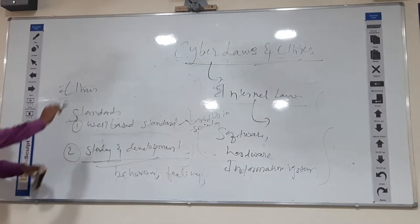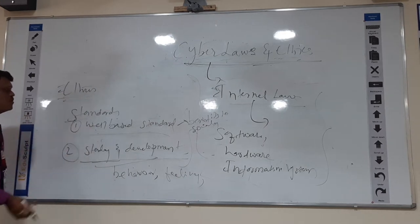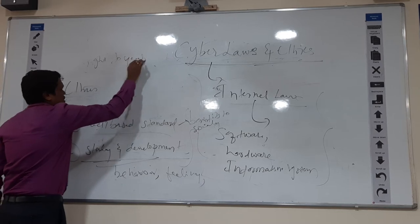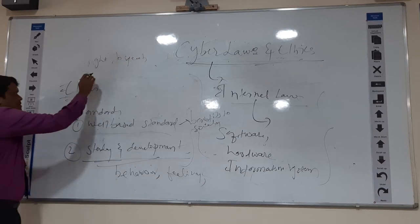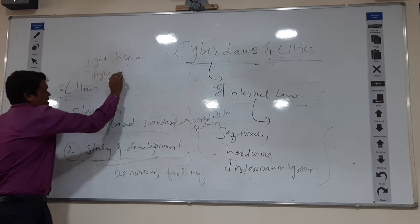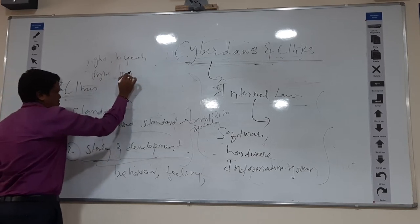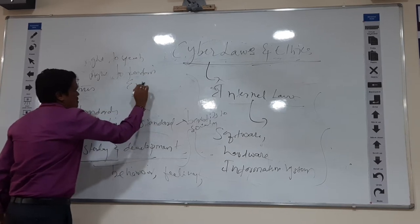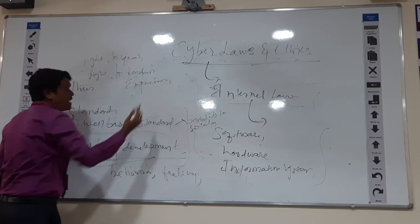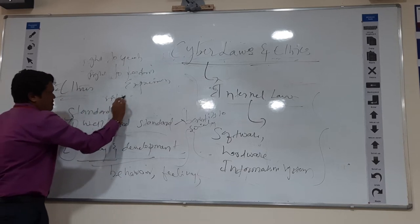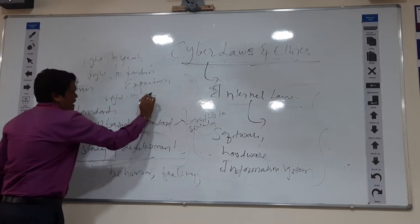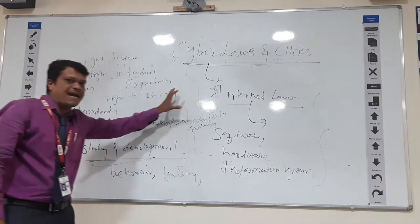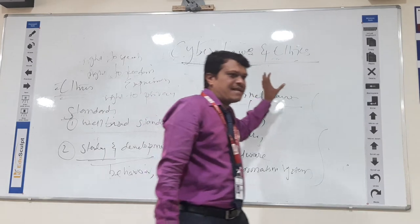We also have things like Rights. Generally we are talking about the Right to Speech, Right to Freedom, and Right to Privacy. These are the things we follow when we are talking about ethics. So ethics are the standards which are conceptual — covering cybercrime and ethics.